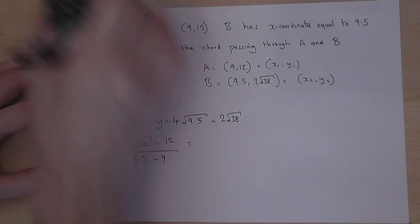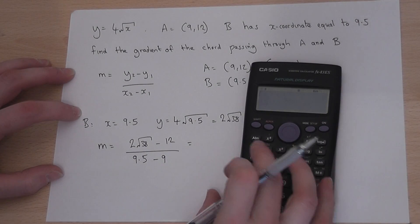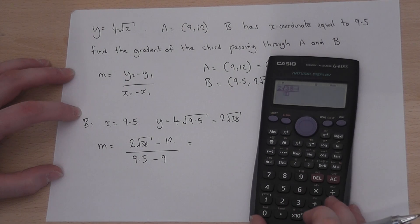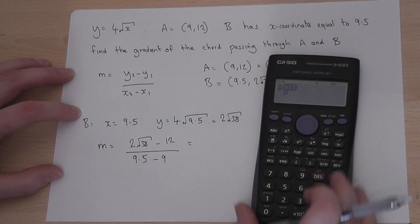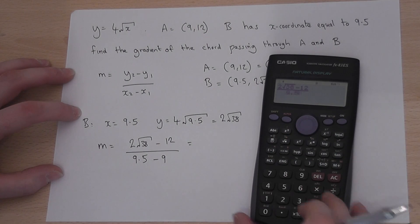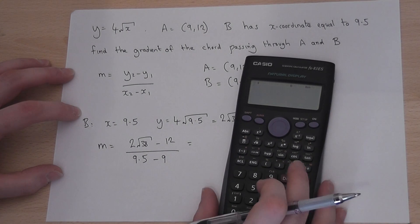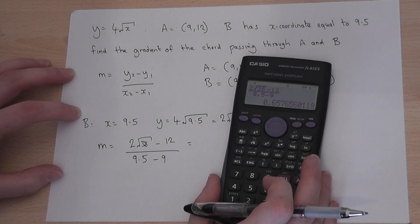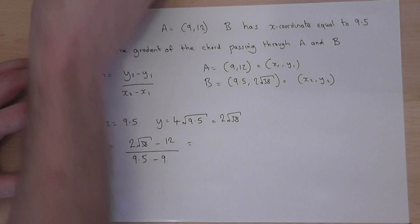I can now put that into the calculator. So, 2 root 38 take away 12, all divided by 9.5 take away 9. Press enter, and press the S to D button, and we get 0.66 to 2 decimal places.